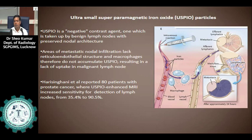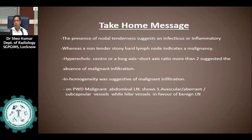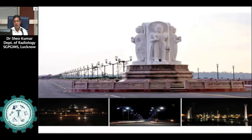Take home message: the presence of nodal tenderness suggests an infectious or inflammatory pathology, whereas a non-tender, stony hard lymph node indicates malignancy. A hyperechoic center or long-to-short axis ratio more than 2 suggests absence of malignant infiltration, while inhomogeneity is suggestive of malignant infiltration. On power Doppler imaging, malignant abdominal lymph nodes show avascular, aberrant, or subcapsular vessels, while hilar vascularity is in favor of a benign lymph node.